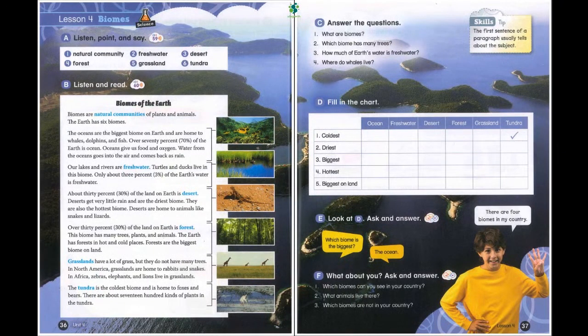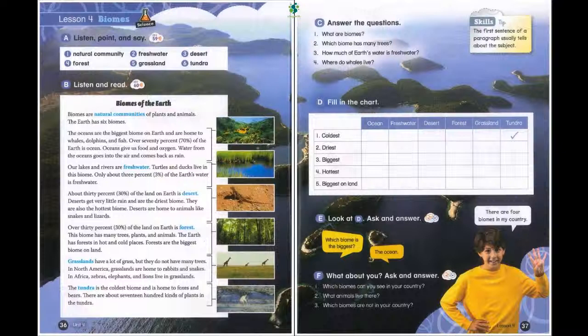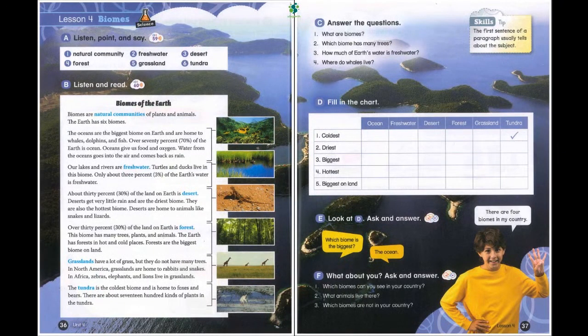Biomes of the Earth. Biomes are natural communities of plants and animals. The Earth has six biomes. The oceans are the biggest biome on Earth and are home to whales, dolphins, and fish. Over 70% of the Earth is ocean. Oceans give us food and oxygen. Water from the oceans goes into the air and comes back as rain. Our lakes and rivers are freshwater. Turtles and ducks live in this biome. Only about 3% of the Earth's water is freshwater. About 30% of the land on Earth is desert. Deserts get very little rain and are the driest biome. They are also the hottest biome. Deserts are home to animals like snakes and lizards.